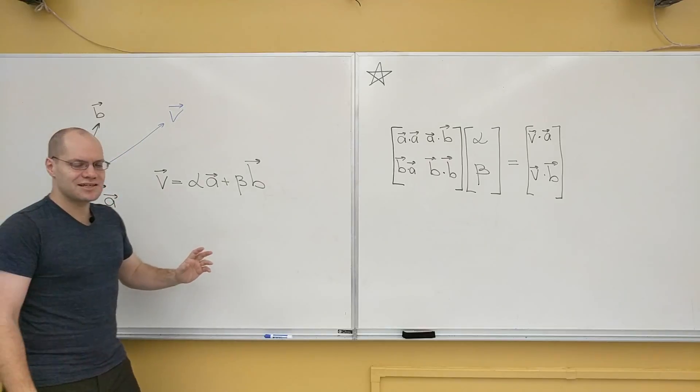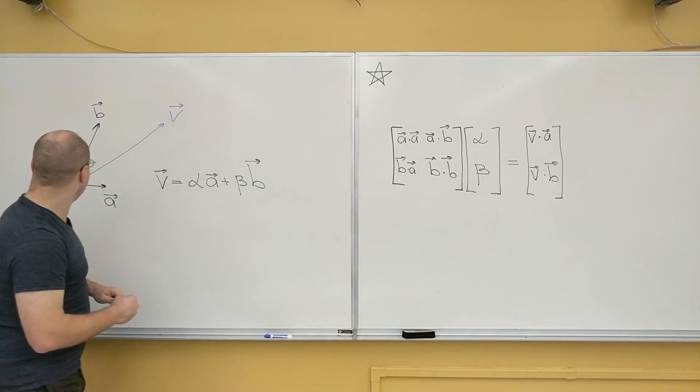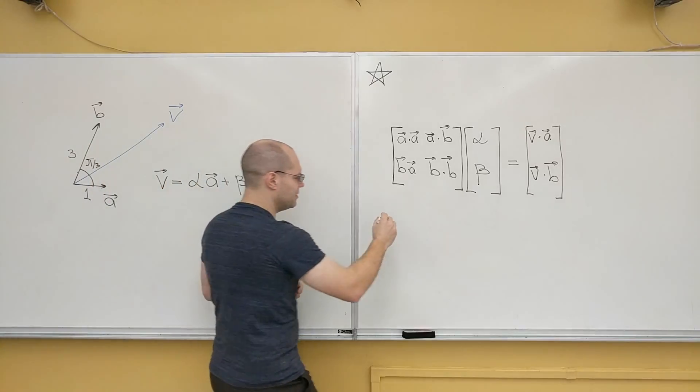Let's just as an example calculate one of these matrices. Let's say that this guy is length one, this one is length three, and the angle between them, it looks like it's π over 3. Is that fair? Okay, let's see what this matrix will be.